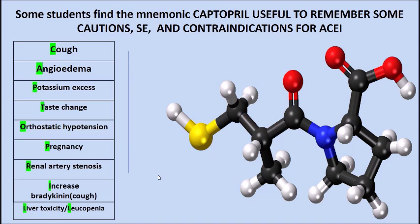Some people like to use the CAPTOPRIL acronym to remember side effects. C stands for cough — ACE inhibitors block the breakdown of bradykinin, so bradykinin increases, causing a severe dry cough especially common in Afro-Caribbean patients. This cough cannot be treated with cough suppressants unless the ACE inhibitor is withdrawn. A is for angioedema, P for increased potassium (hyperkalemia), T for taste changes, O for orthostatic hypotension — a severe drop in blood pressure when standing, so the first dose is usually given at night.